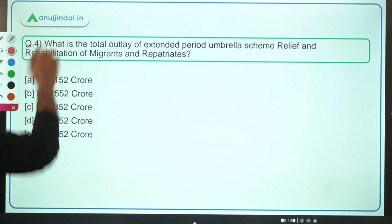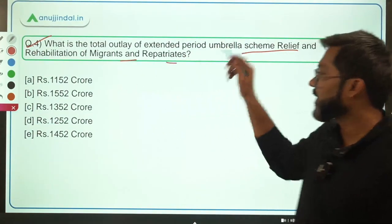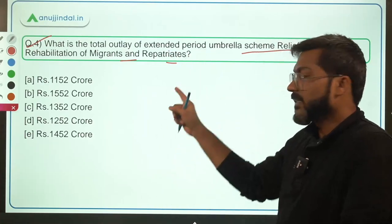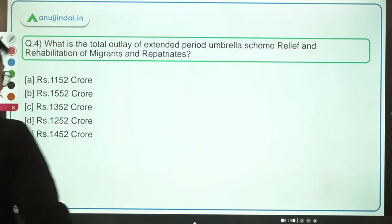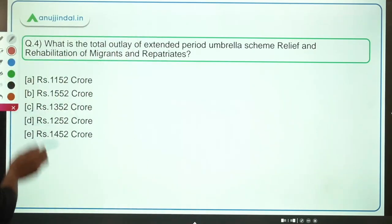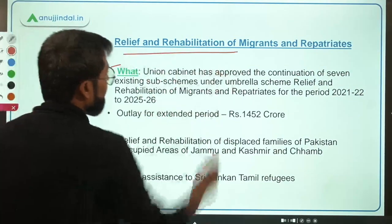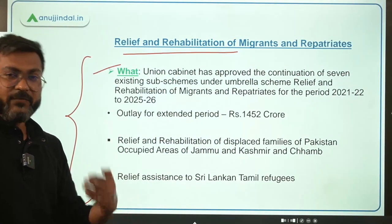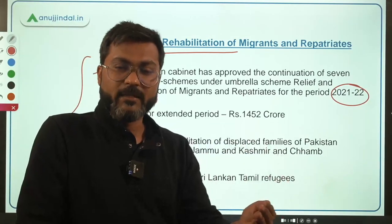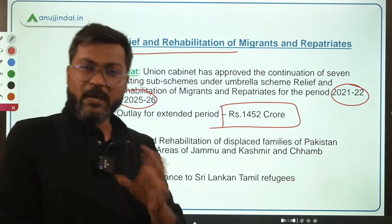Question number four asks about the total outlay of the extended period of the umbrella scheme for relief and rehabilitation of migrants and repatriates. This umbrella scheme has 7 sub-schemes and is in news because it has been continued for the period from financial year 2022 up to financial year 2026. The Union Cabinet approved the continuation of 7 existing sub-schemes under this umbrella scheme. The total outlay for the extended period is rupees 1452 crores.